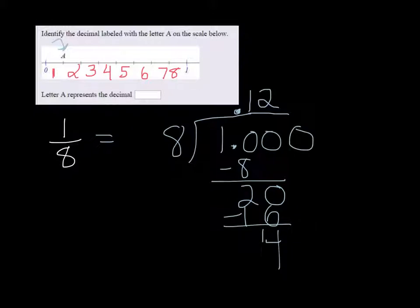We need one more zero to get forty. Eight goes into forty five times evenly. So A is equal to .125.